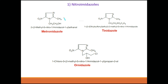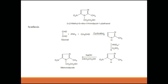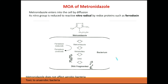Nitroimidazole has a ring with 2 nitrogen atoms in a 5-membered cycle ring — this is its structure. Regarding synthesis, we create glyoxals with 2 ammonia, followed by cyclization of nitrogen. After this cyclization, a new compound is formed. This is the mechanism of action — the drug enters the cell by diffusion.